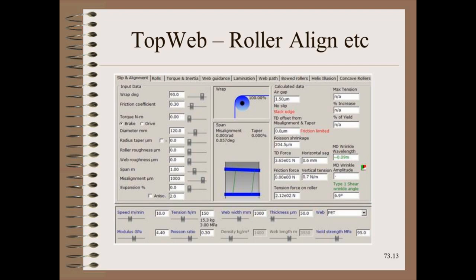Shown here is the input and output screen for the roller module. The user must enter several simple inputs like roller geometry, web tension, and web modulus. The user can then experiment with different levels of misalignment to check for slack edges and wrinkles, which are clearly flagged by words and pictures. The screen also performs roller traction calculations, including the effects of air entrainment.